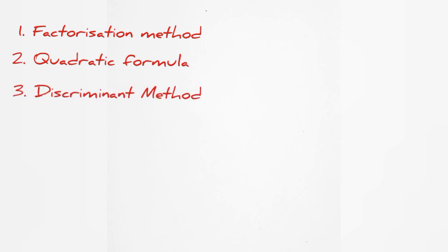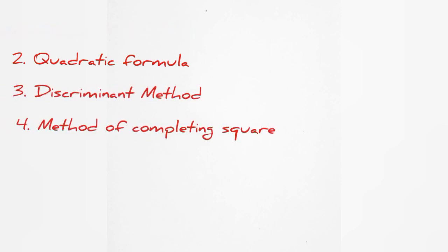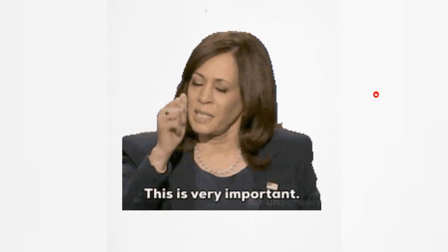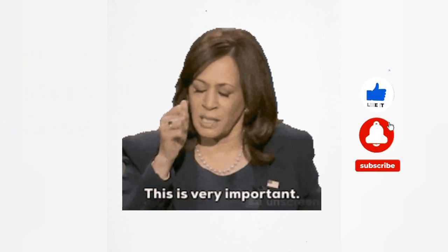Method 3 is the discriminant method. Method 4 is the method of completing the square. These are the four main and important methods to solve any type of quadratic equation.